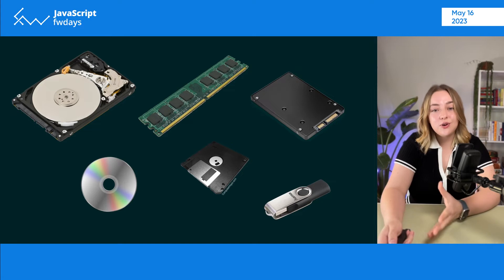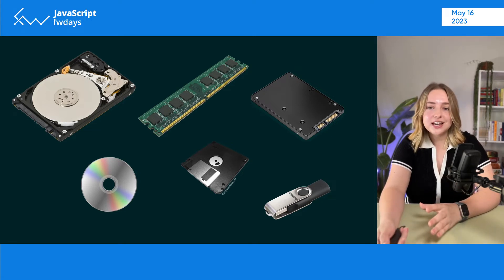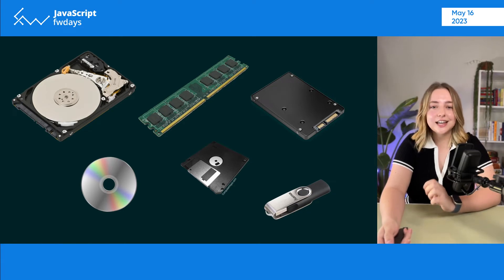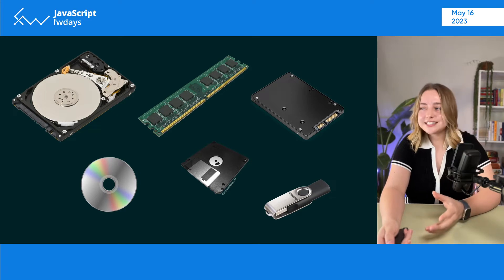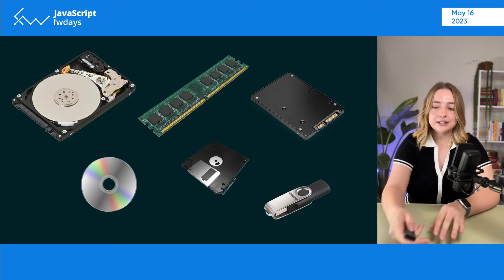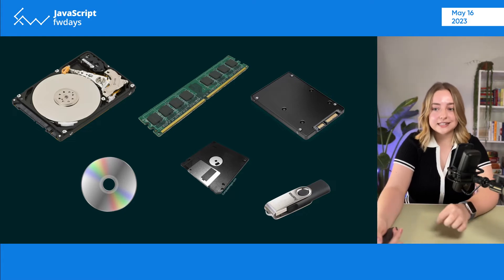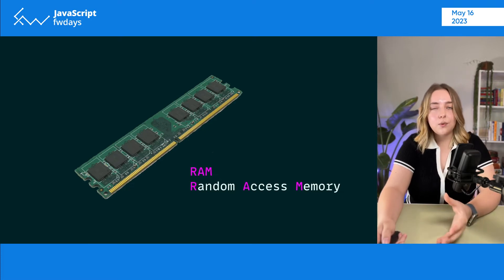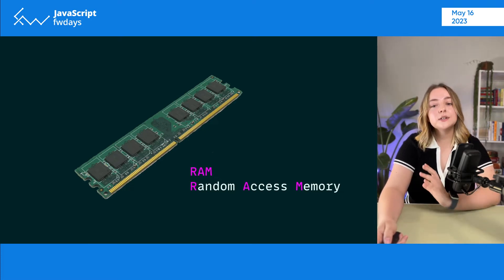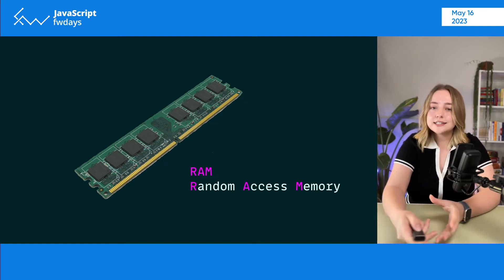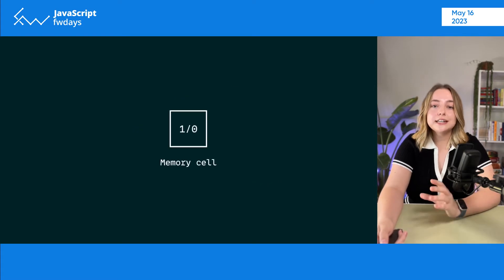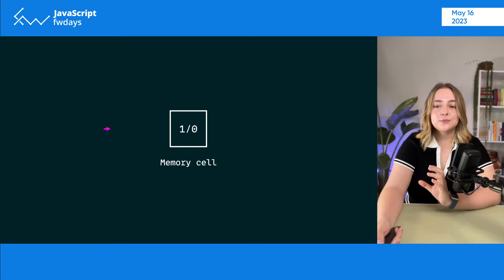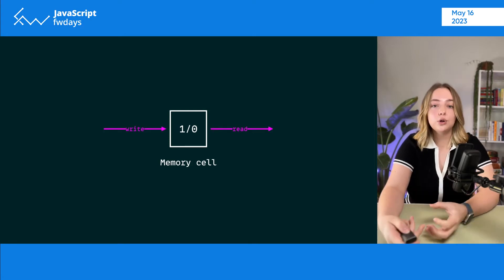But how do computers store these bits? There are different types of memory that store them in their own unique ways. For example, DVD discs use small indentations on the surface that reflect light differently when being shined on with a laser. And floppy disks, if you remember those, use magnetic encoding so when the reading head passed through the disk it could read that information. But when it comes to memory our JavaScript applications use, we are primarily dealing with RAM or random access memory — the working memory that the CPU uses while running applications.